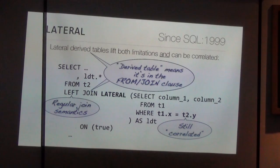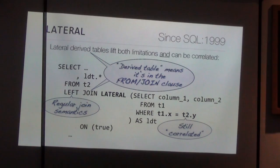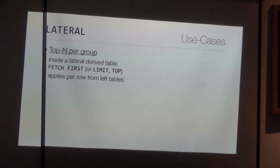It's still a join, which means you can use normal join syntax — left join, outer join, or cross join. That also means you still need an ON clause. I put ON TRUE there explicitly so you can see it. It's still needed, except of course with a cross join. Cross joins don't need an ON clause. But other than that, it doesn't change anything regarding joins.